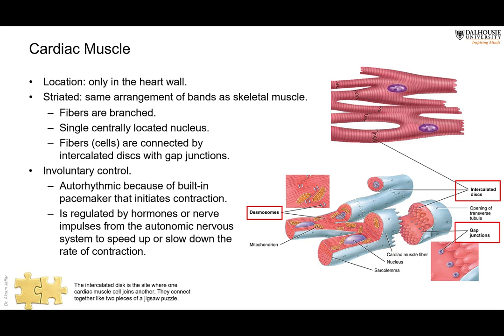Cardiac muscles are under involuntary control and have autorhythmicity — they can contract by themselves if they are viable. The autonomic nervous system controls them: the sympathetic nervous system increases the rate and force of contraction, as does adrenaline and noradrenaline from the endocrine system, preparing the body for fight or flight. The parasympathetic nervous system reduces the rate and force of contraction. You cannot voluntarily increase your heart rate.